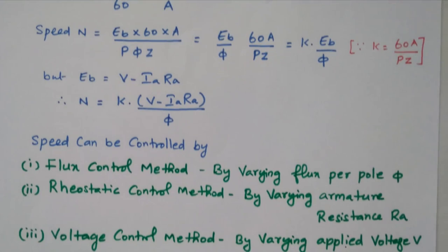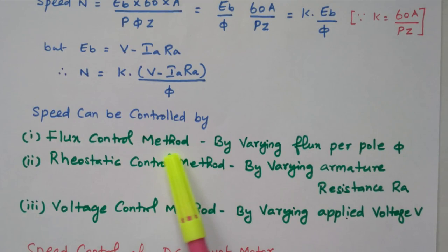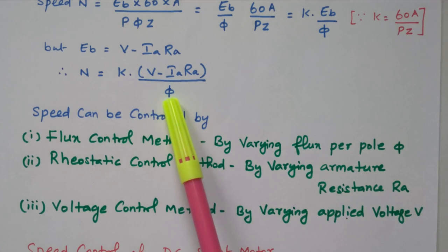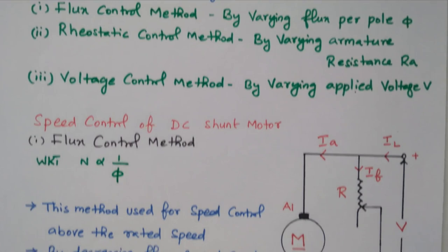By varying these three parameters we can vary the speed of the DC motor. Based on that we have three different methods. By varying the flux it is called the flux control method. Second, the rheostatic control method — by varying the armature resistance RA. Third, the voltage control method — by varying the applied voltage. So flux control, variable voltage control, and armature rheostatic control are the three methods available.